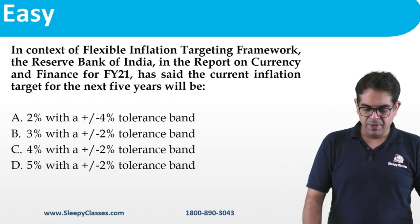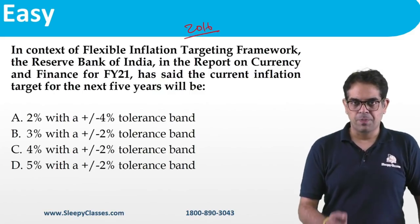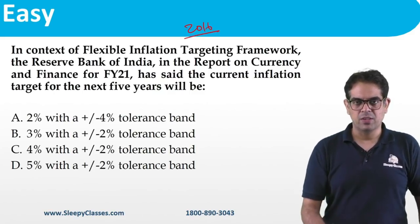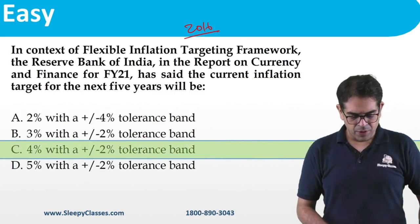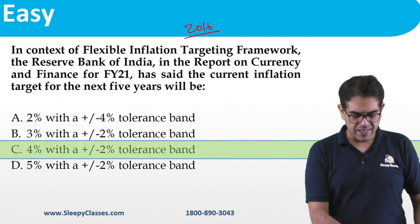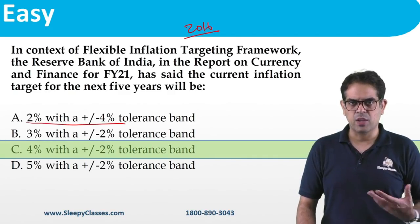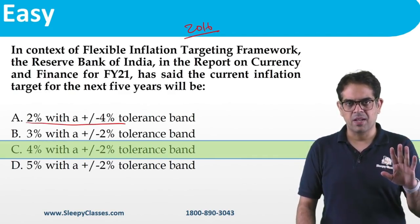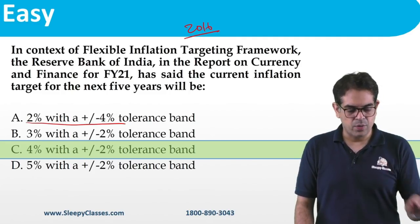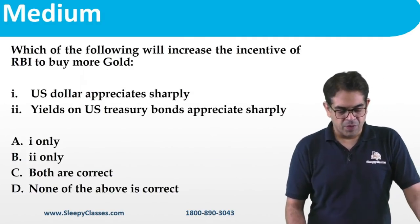Next: the flexible inflation targeting framework was introduced in 2016 and revised in 2021 (5-year term). The target remained the same — 4% plus or minus 2%. Don't overthink this or assume something changed — just know the target remained unchanged. The target band of 2–6% with a midpoint of 4% remains in place.